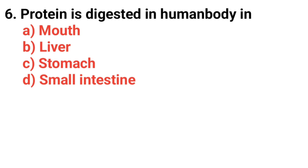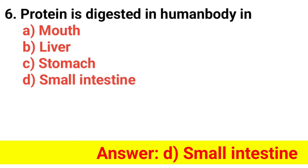Question 6. Protein is digested in the human body in? Answer option D — Small intestine.